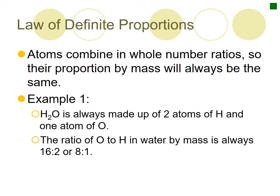So for NaCl or H2O, you're not going to have H1O and a half — they will always be the exact same thing. For sugar, it's always C6H12O6; it will never be a different percentage. For water, it's always made up of two hydrogen atoms and one oxygen. So by mass, the ratio of oxygen to hydrogen is always 16 to 2, or 8 to 1.